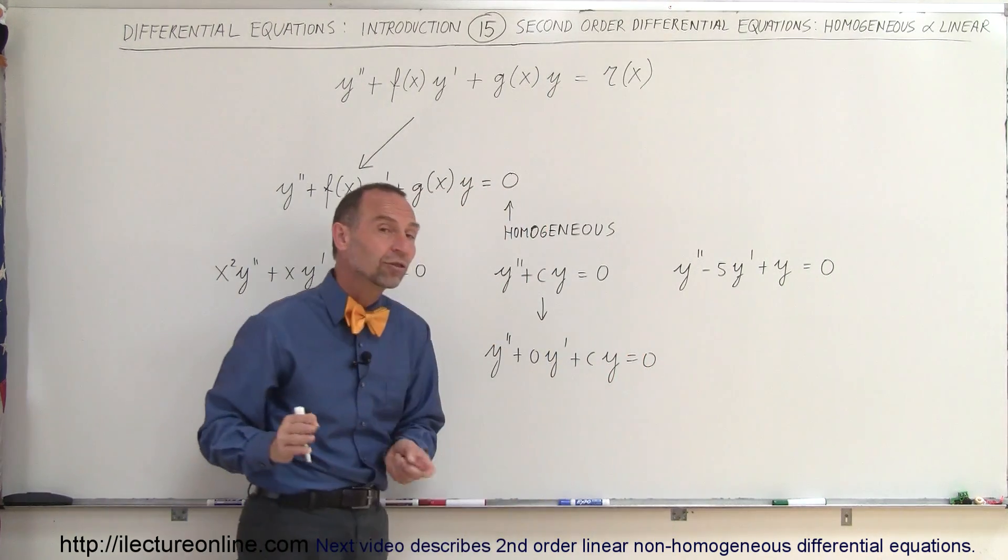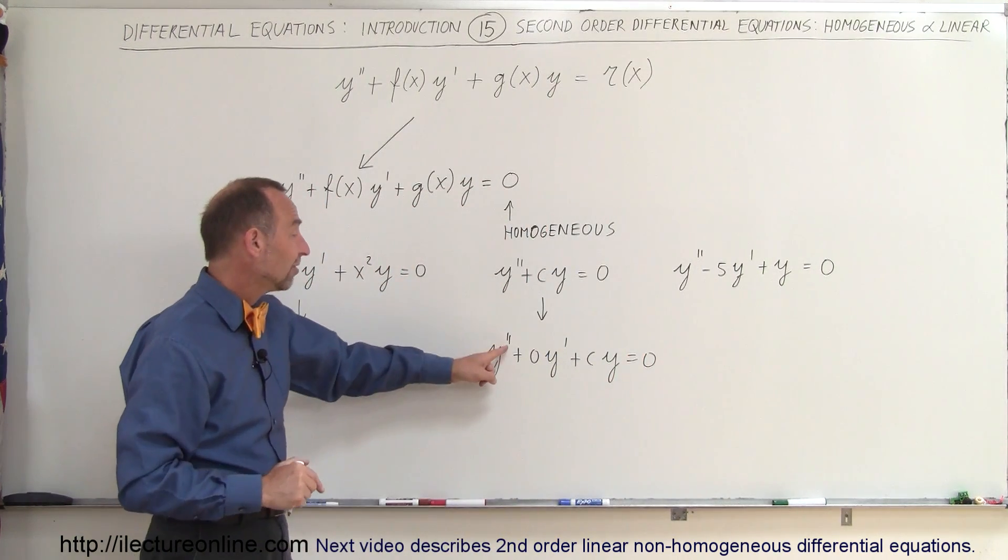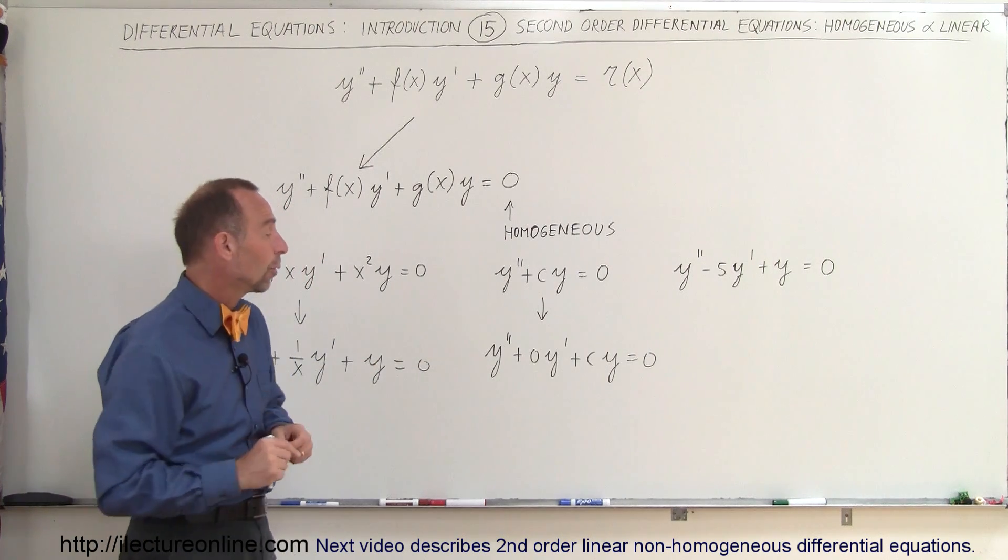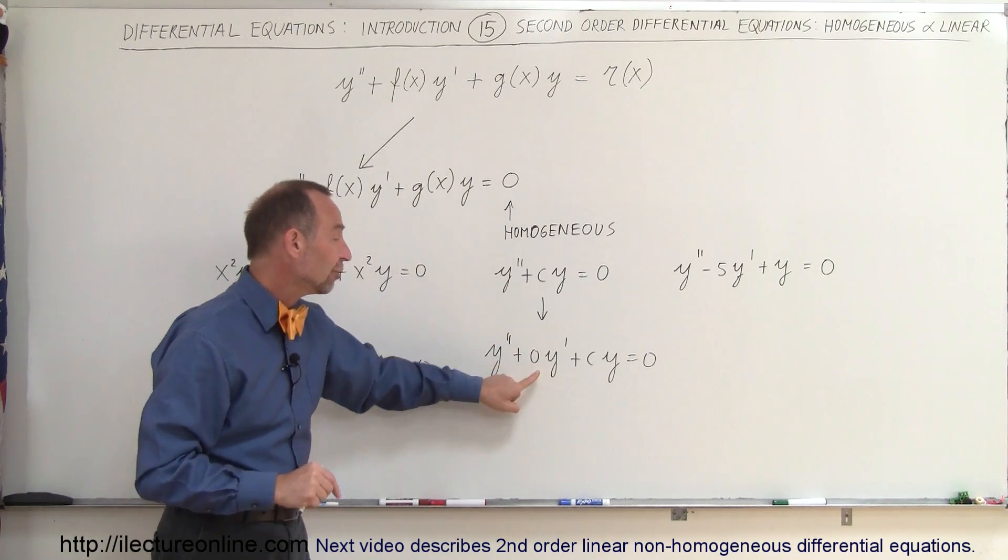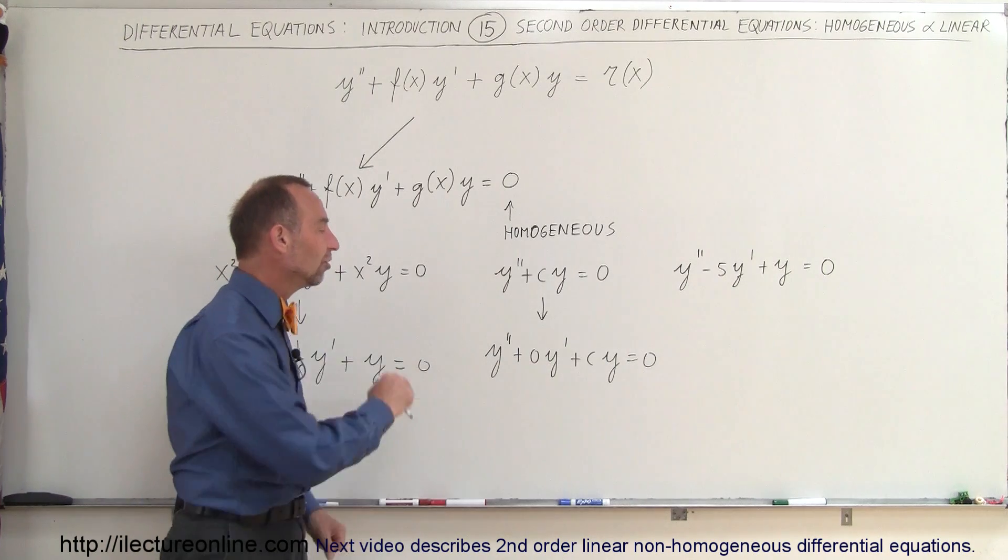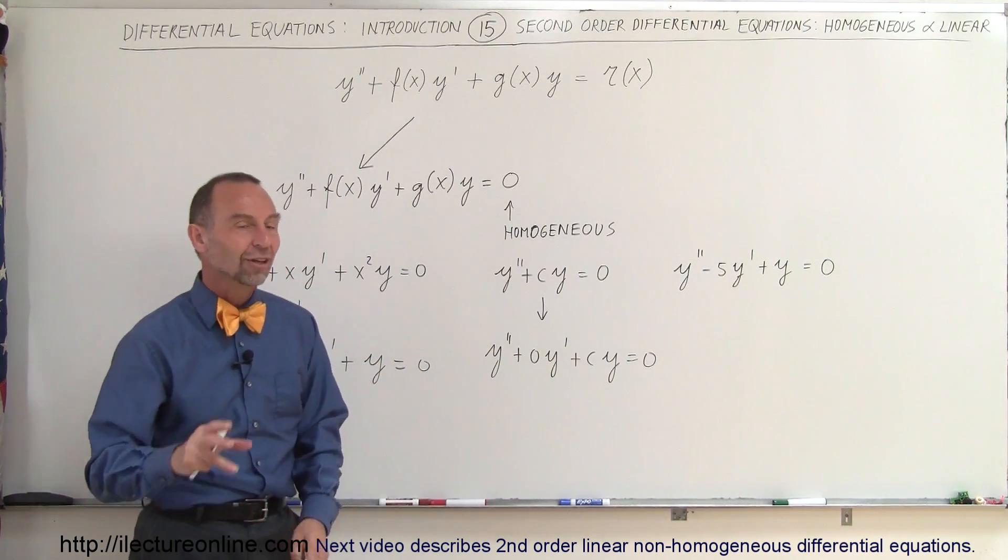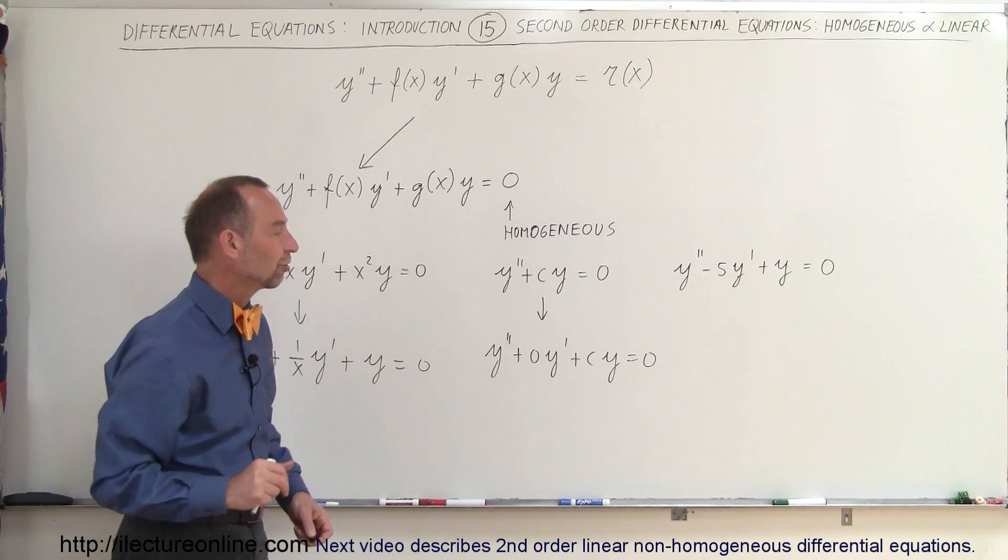Again, since it's set equal to zero, it's called a homogeneous equation. It's a second-order differential equation and yes, it's linear even though the middle term, the y prime term is missing. This is still considered to be a linear second-order homogeneous differential equation.